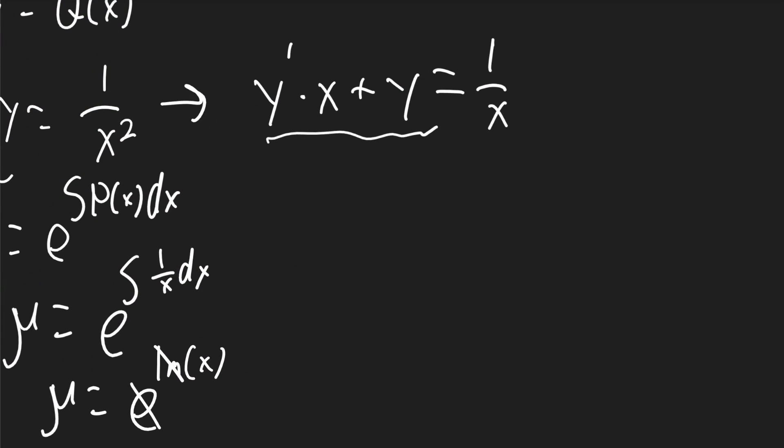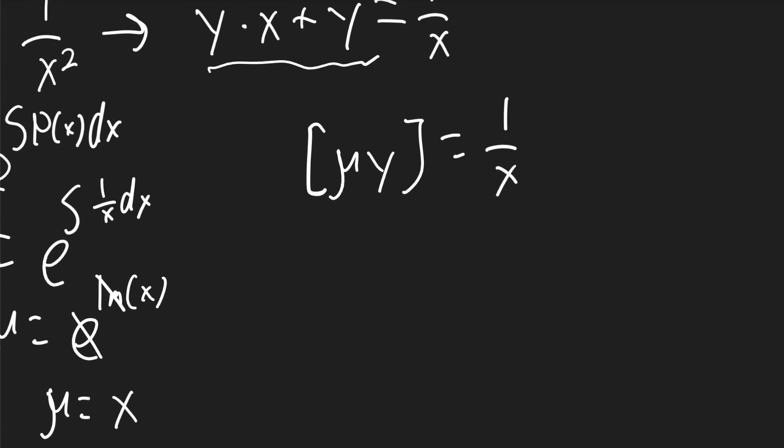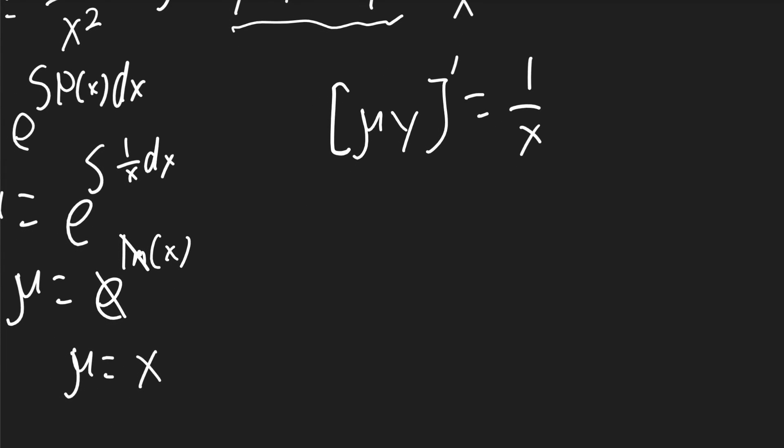Now the left-hand side of the equation is just the power rule when you take the derivative of mu times y. And we said mu was x, so it'll be y times x. That's the derivative, and it'll equal 1 over x.